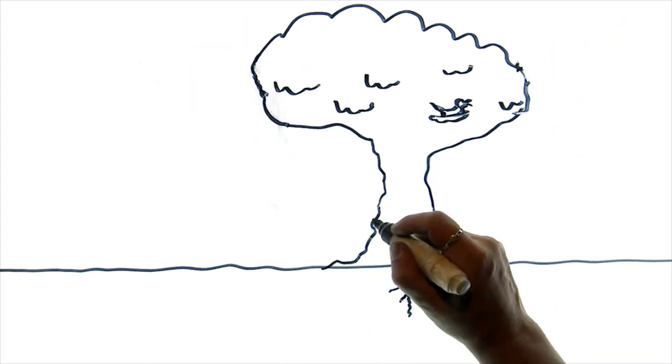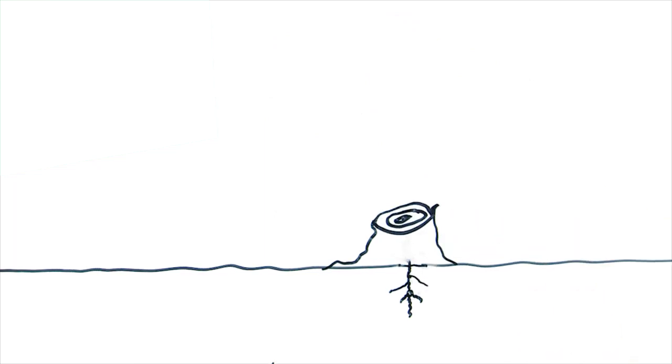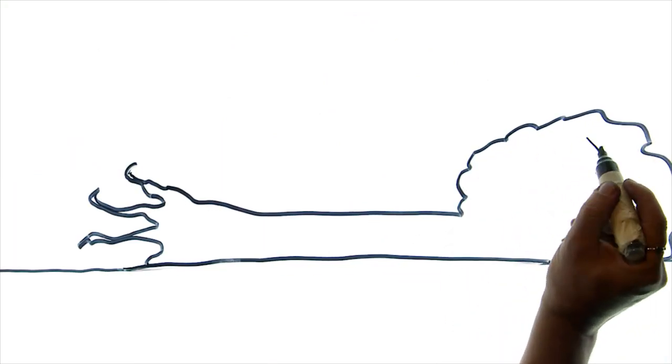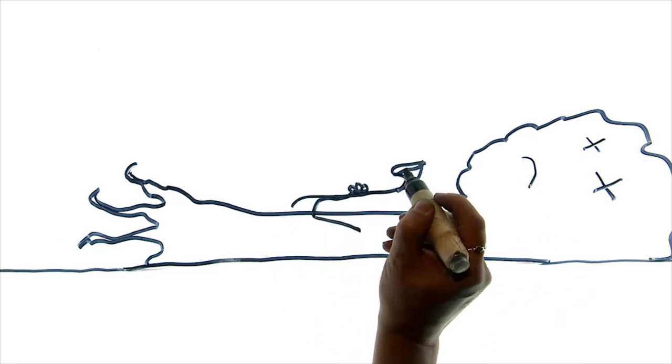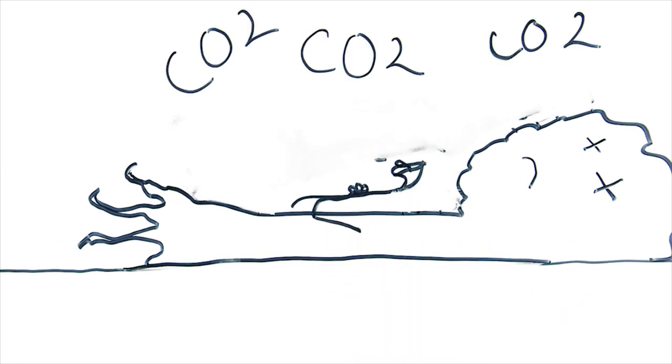The problem is, sometimes trees get cut down and used for other things. And at the end, no tree lasts forever. And when it dies, all the CO2 that it sequestered is re-released back into the atmosphere.